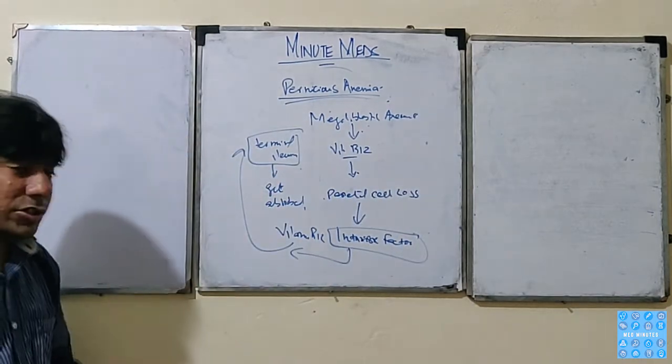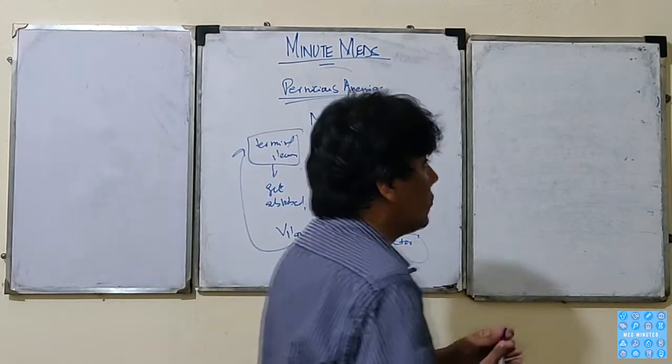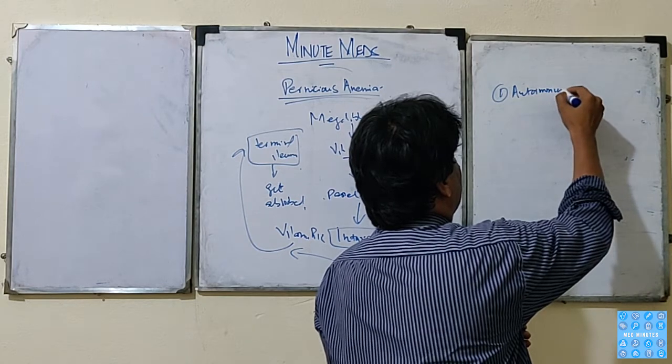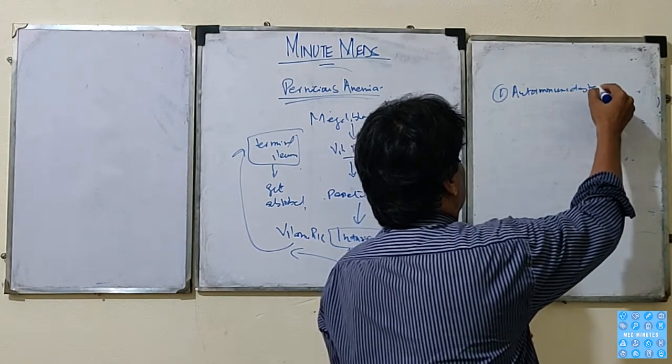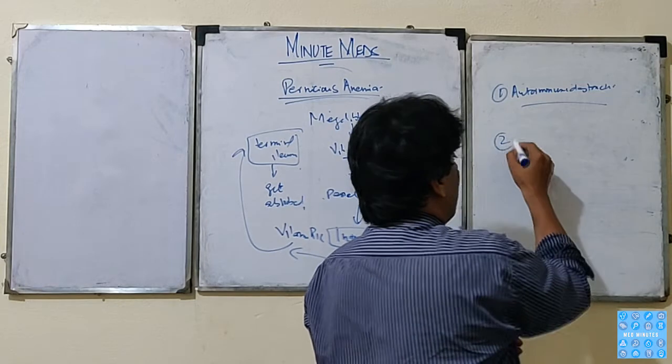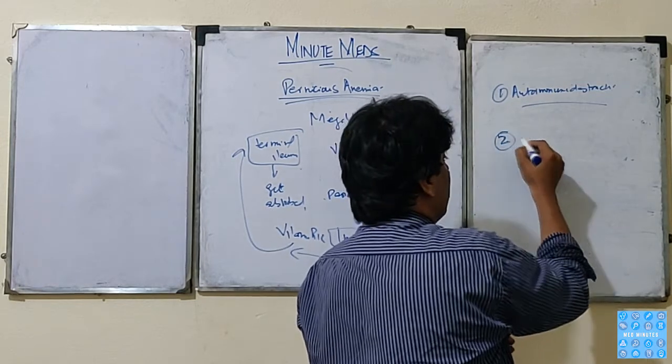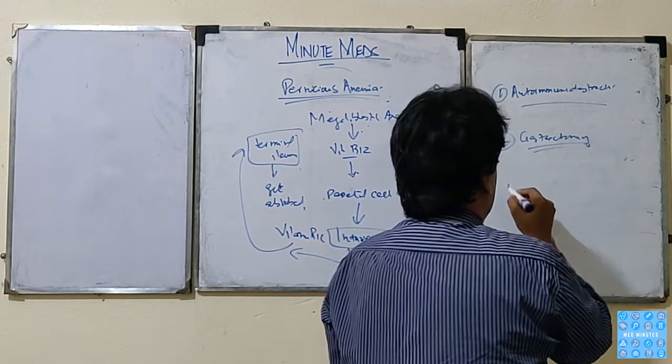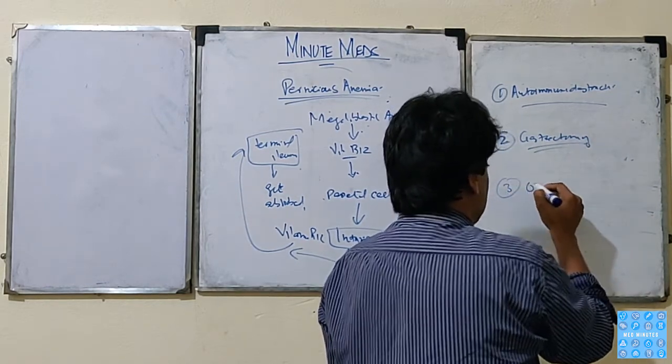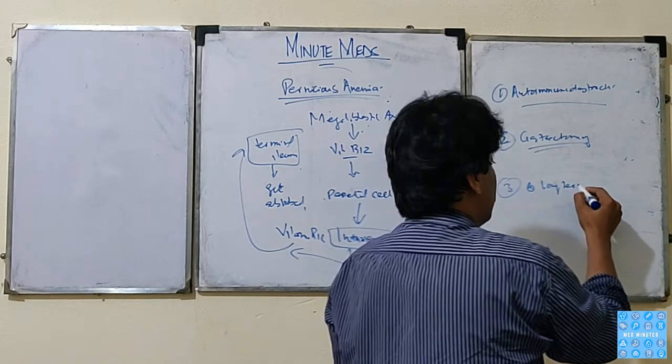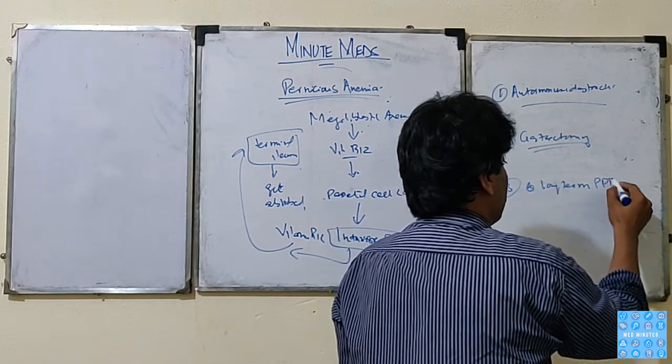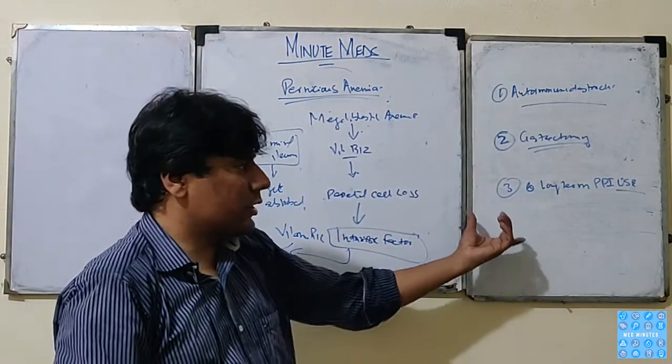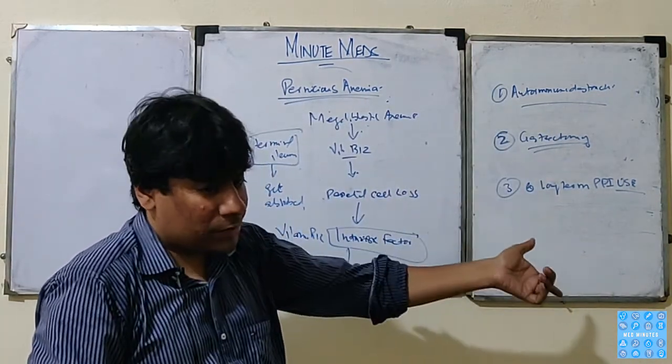And there is a disease in which there is autoimmune destruction of the parietal cells. This is pernicious anemia, caused by antibodies against the parietal cells.